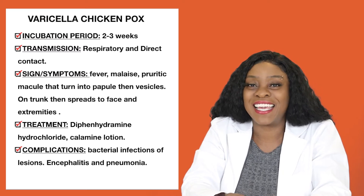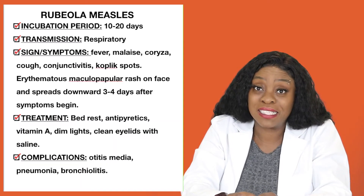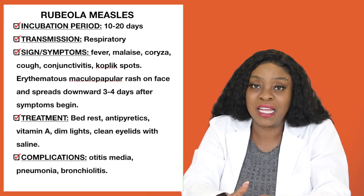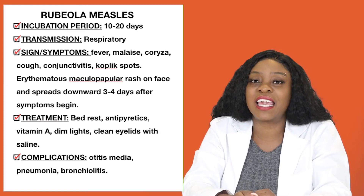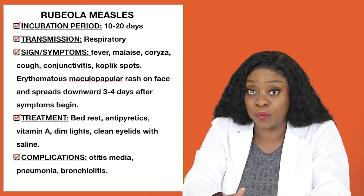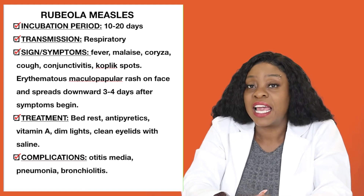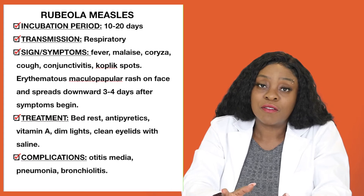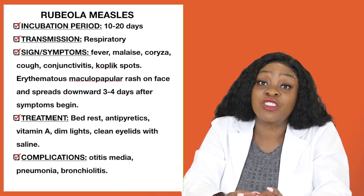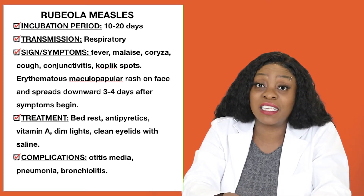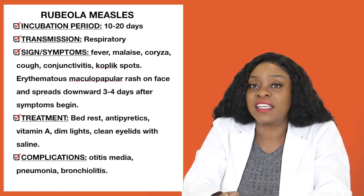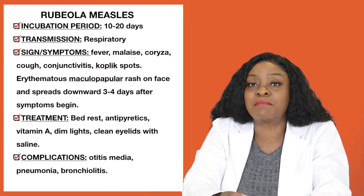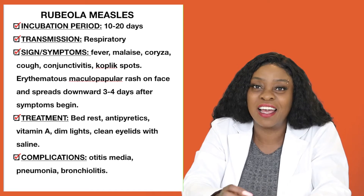Another common communicable disease in pediatrics is rubiola measles. Rubiola measles has an incubation period of 10 to 20 days and transmits via airborne transmission. It has different stages. Symptoms start with a fever, a generalized malaise, a cough, and some children have conjunctivitis. What is particular to rubiola is that children develop Koplik spots. As they move out of the prodromal stage, they start to develop red macules and papules, or an erythematous maculopapular rash — that's just a long way of saying red bumps over the skin.